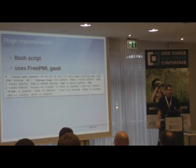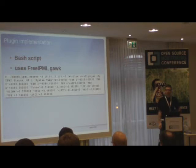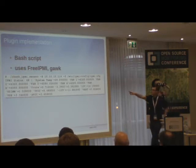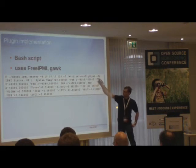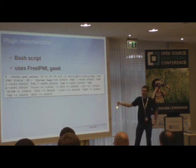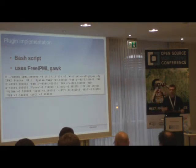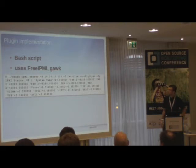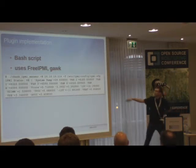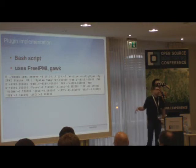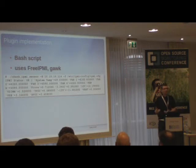The output follows the Nagios plugin development guidelines: status information, then a pipe symbol followed by performance data, and a return code indicating OK, warning, or critical. In this case everything is fine — all sensors are okay — and we get values for all threshold-based sensors as analog readings, which can be used with PNP for Nagios, Ingraph, or similar graphing tools.